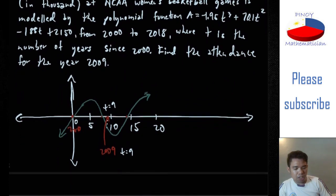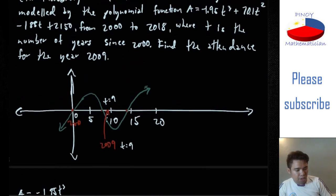So let's rewrite the equation. A equals negative 1 point, attendance, or A equals negative 1.95T³.